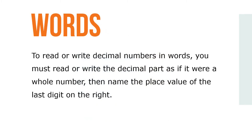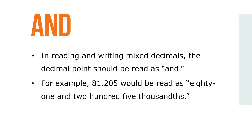To read or write decimal numbers in words, you must read or write the decimal part as if it were a whole number, then name the place value of the last digit on the right. In reading and writing mixed decimals, the decimal point should be read as "and." For example, 81.205 would be read as eighty-one and two hundred five thousandths.